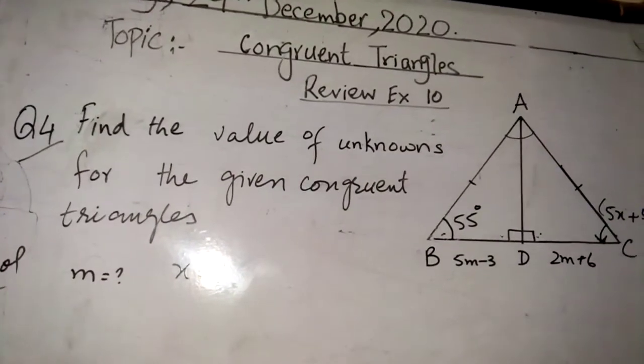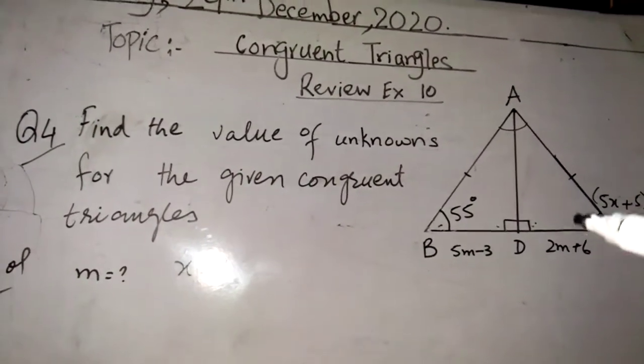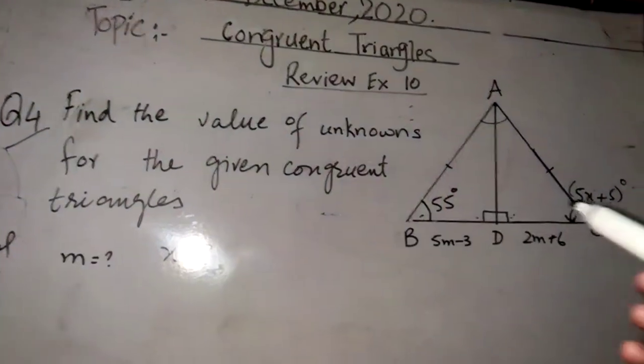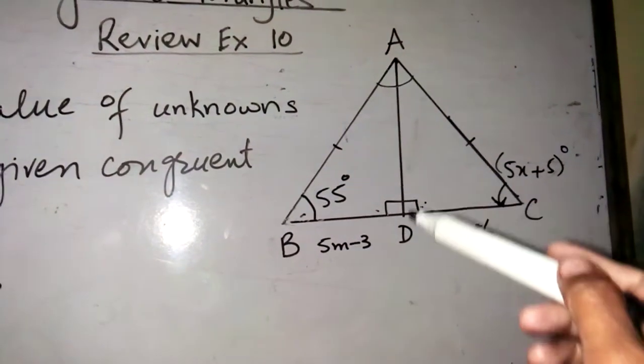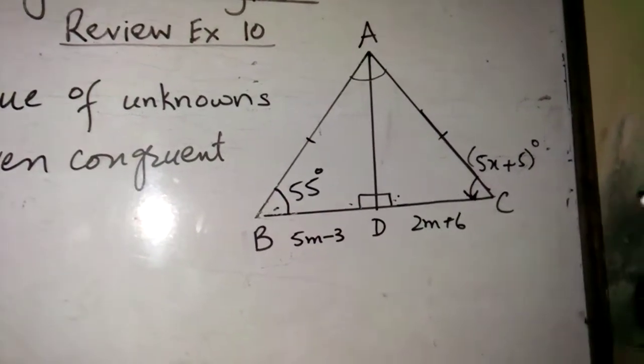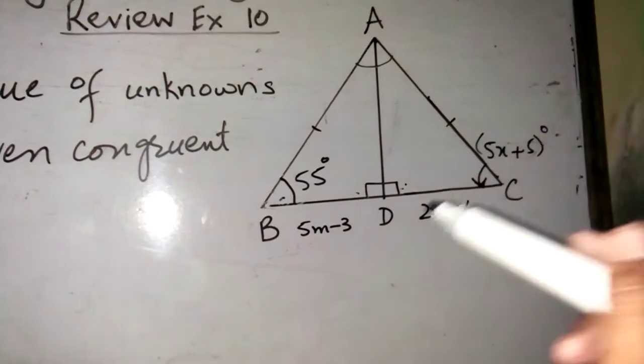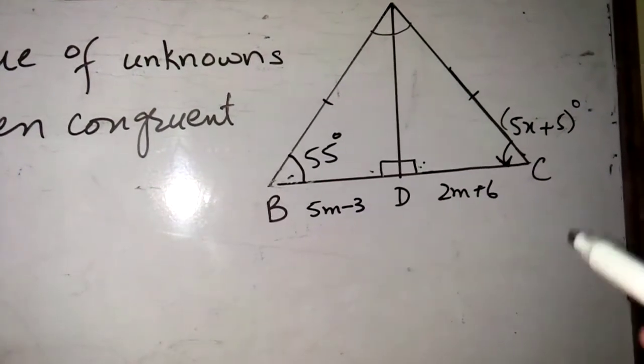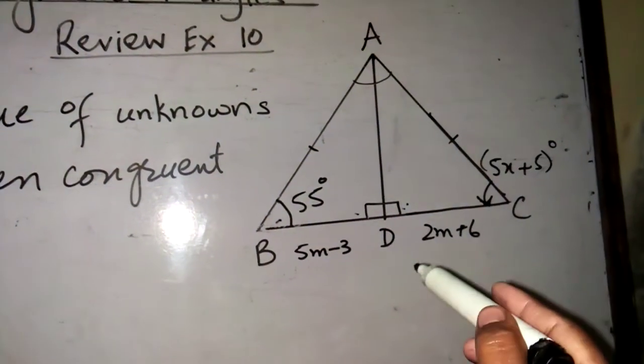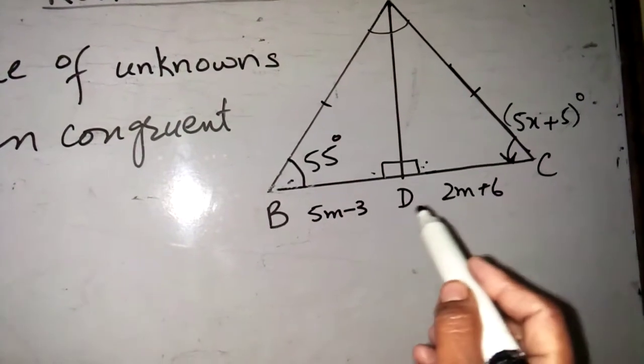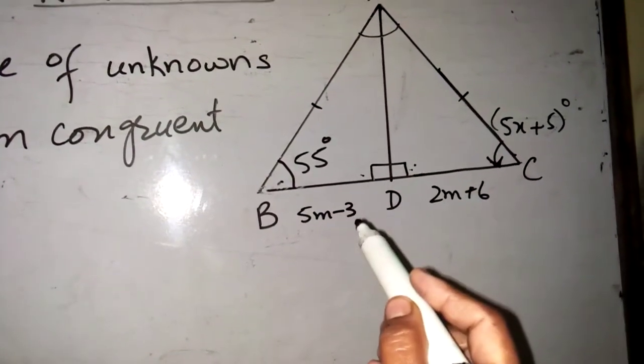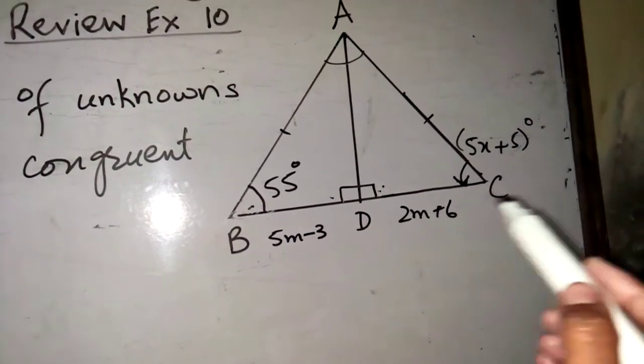Question number 4: Find the value of unknowns for the given congruent triangles. These are two adjacent congruent triangles ABD and ACD. AD is the right bisector of angle A. The measurement of BD is 5m - 3 and DC is 2m plus 6.